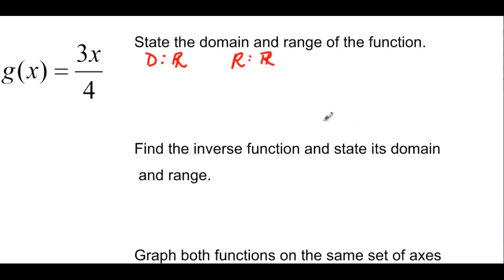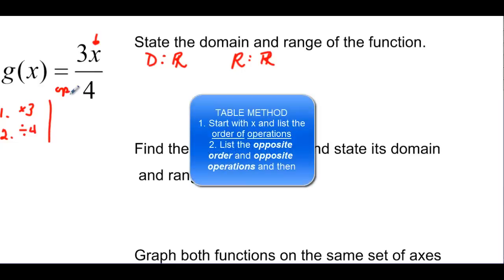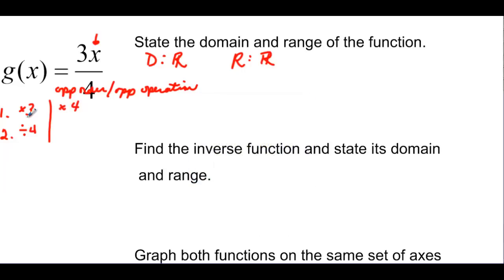Find the inverse function and state its domain and range. Alright, so here we go. How do we do that? There's a couple ways you could do it. One way is to do what I call the table method. And that's just start with x and then just list order of operations. Well, the first thing we would do is we multiply by 3. And the second thing we do then, after we've multiplied x by 3, is we divide it by 4. So we want to go the opposite order and opposite operations. So the last thing we did was divide by 4. So now we're going to take x and we're going to multiply by 4. The first thing we did was multiply by 3. So the opposite of that is to divide by 3. g inverse of x is going to be starting with x and we multiply by 4. And then all of this is going to be divided by 3. And when I'm doing the table method, I like to put parentheses around what I've done. Because each step that you do is applied to everything up to that point.